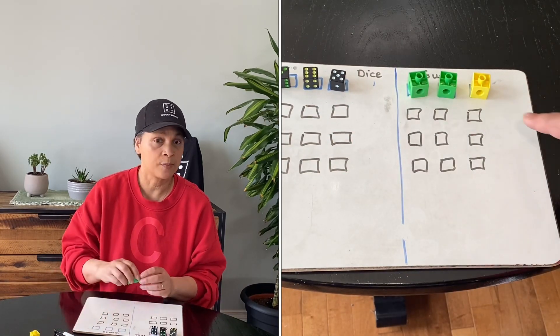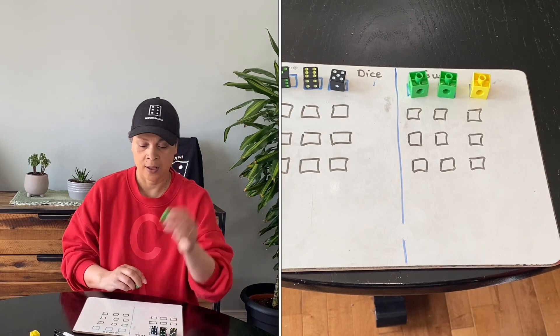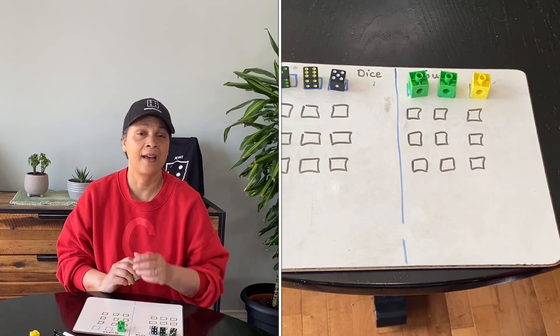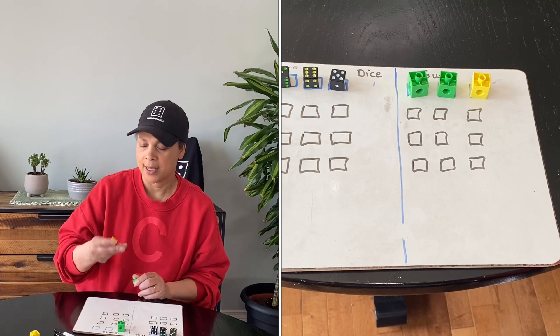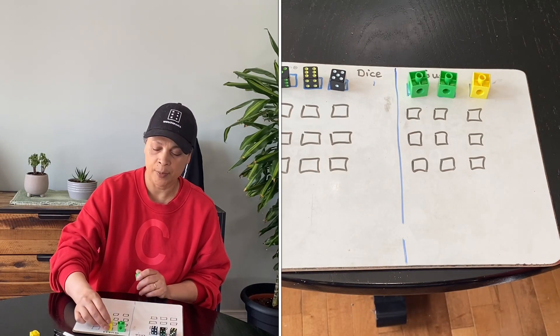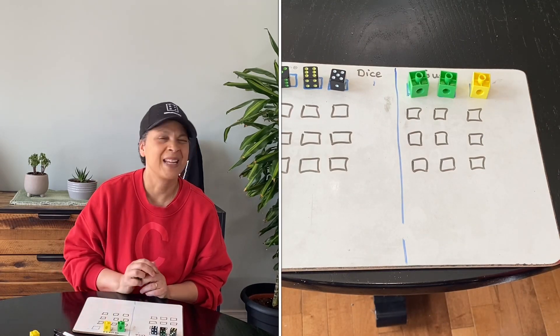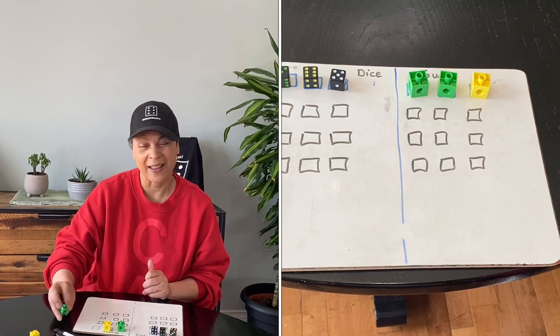Then the partner arranges their dice in a certain way and you give them clues. Green means you have the right number in the right spot. Yellow means you have the right number but in the wrong spot. If you give nothing, it means they don't have the number at all. I'm going to flip my camera around and play with my son, then come back and talk about some modifications.